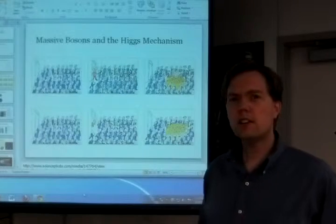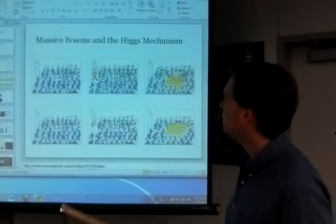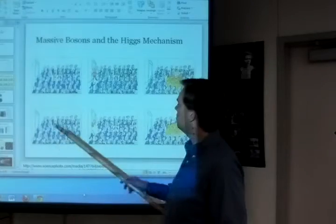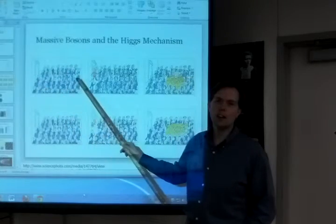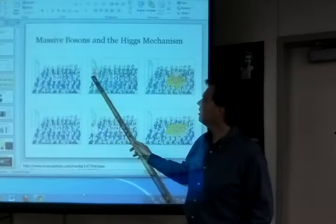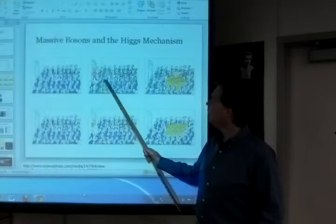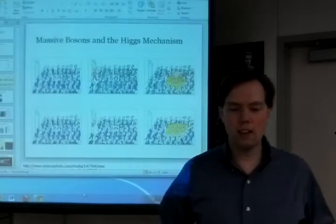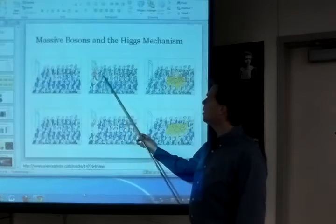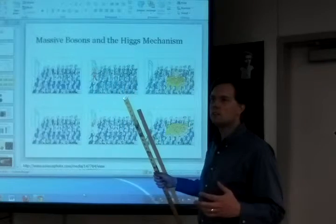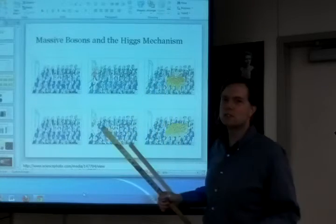Now imagine there exists a field throughout all space in which these weak bosons interact. The idea goes something like this: imagine you've got a room full of physicists, and in walks Dr. Einstein. All of a sudden, the physicists clump to him. And so Einstein, as he tries to walk around this room, experiences resistance to his motion because there are all these other particles clumping around him. That's the analogy for the Higgs field.